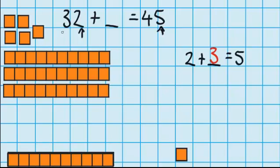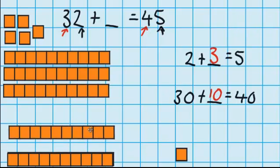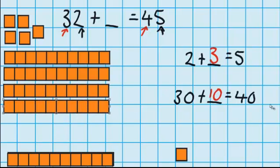Now I'm going to move on to the tens. The question says I've got 3 tens, and you can see those 3 tens here. But I need to have 4 tens, so I'm thinking 30 plus what equals 40? Well I know 30 plus 10 equals 40. But let's just check that with the materials — I'm going to move 1 ten up to there. And you can see we were right: we've now got 4 tens.